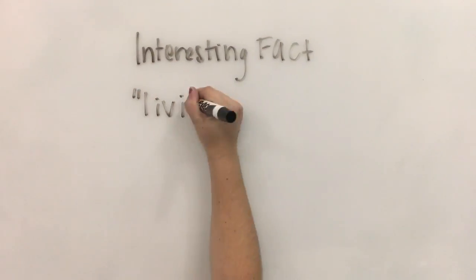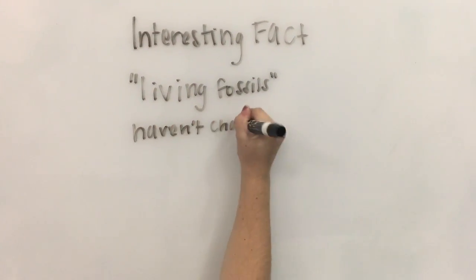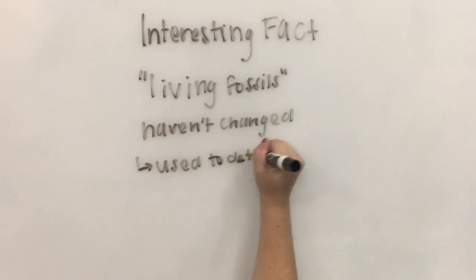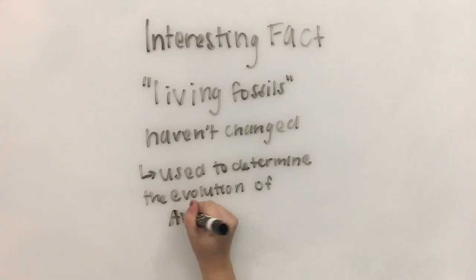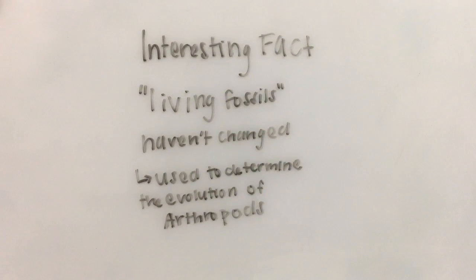An interesting fact is that Onychophora are considered living fossils because they have not changed over the 520 million years of their existence. Therefore, scientists can use it to determine the evolution of arthropods.